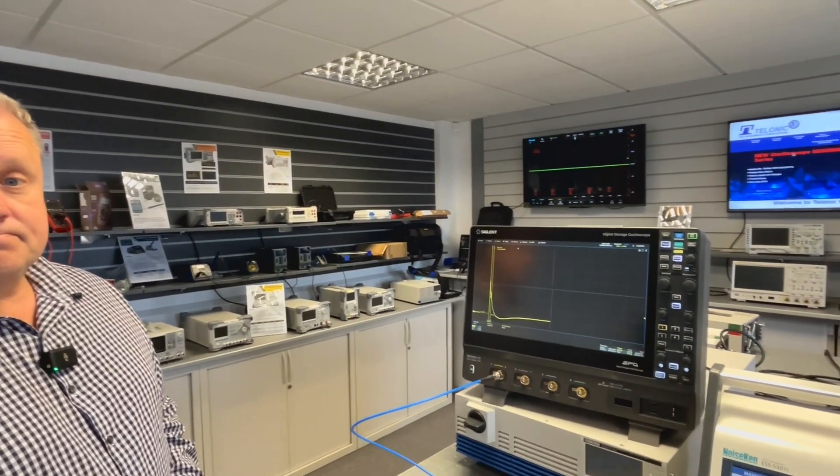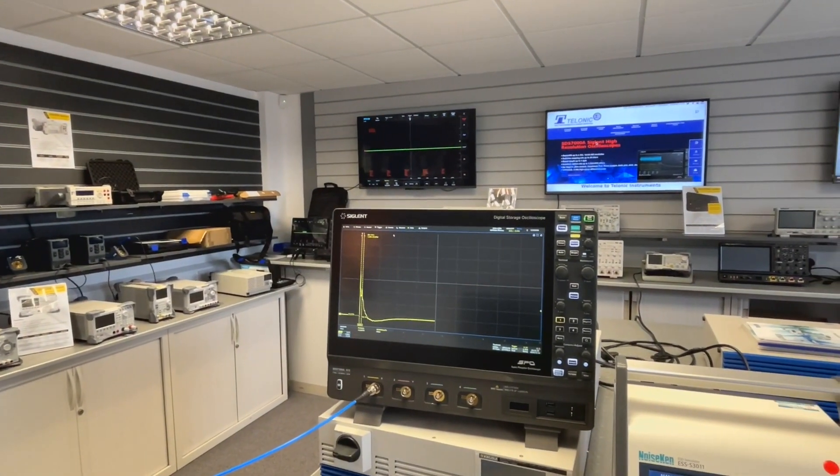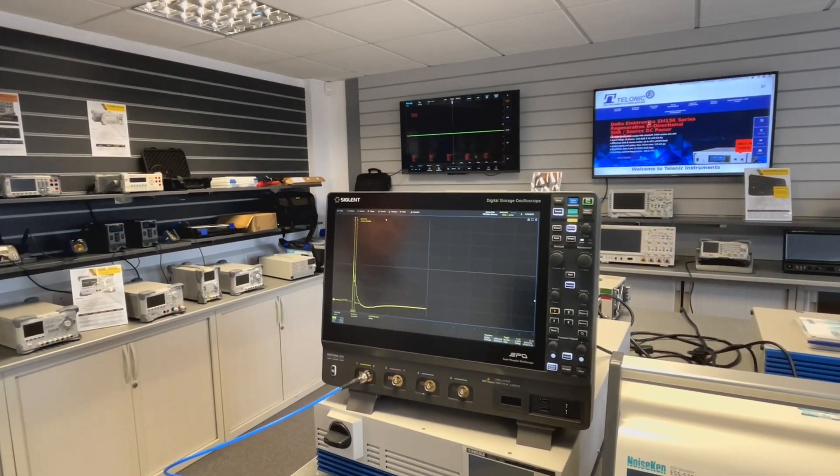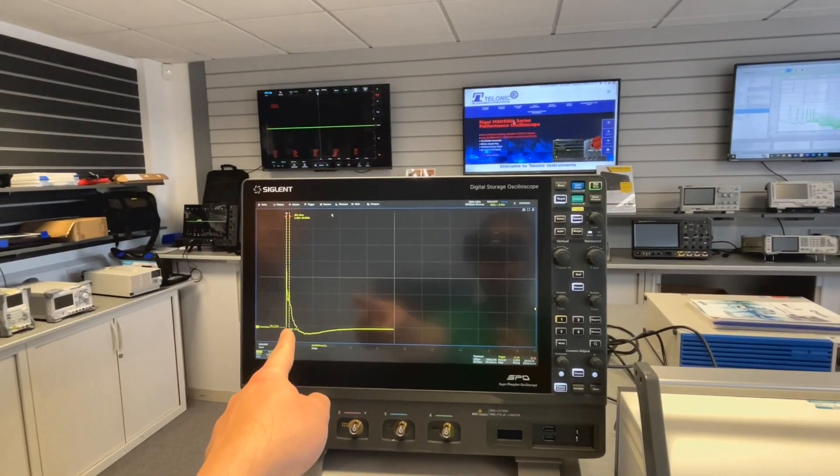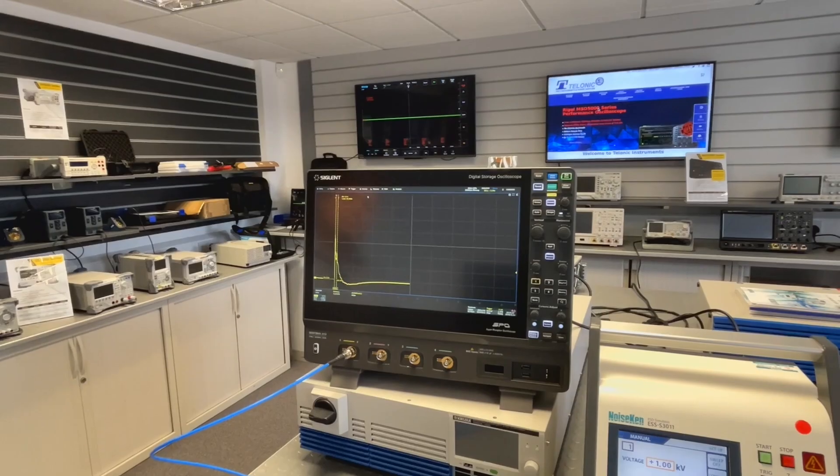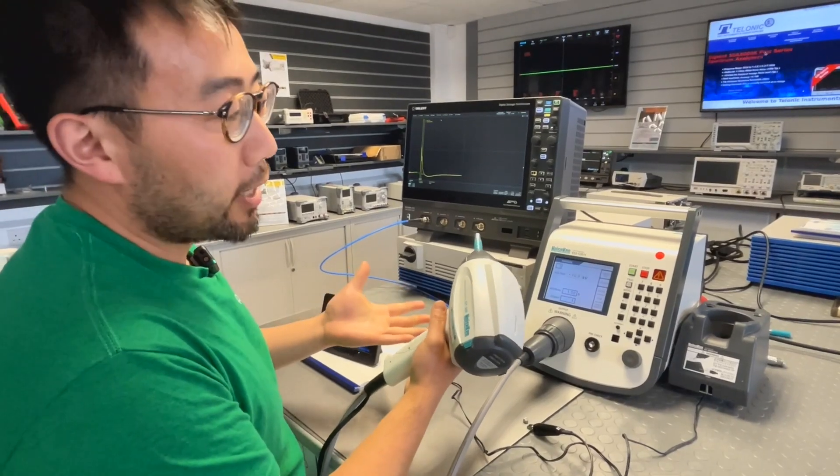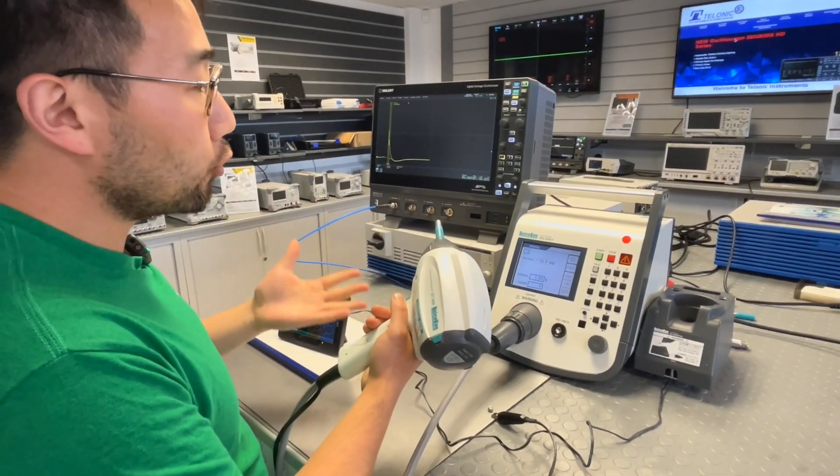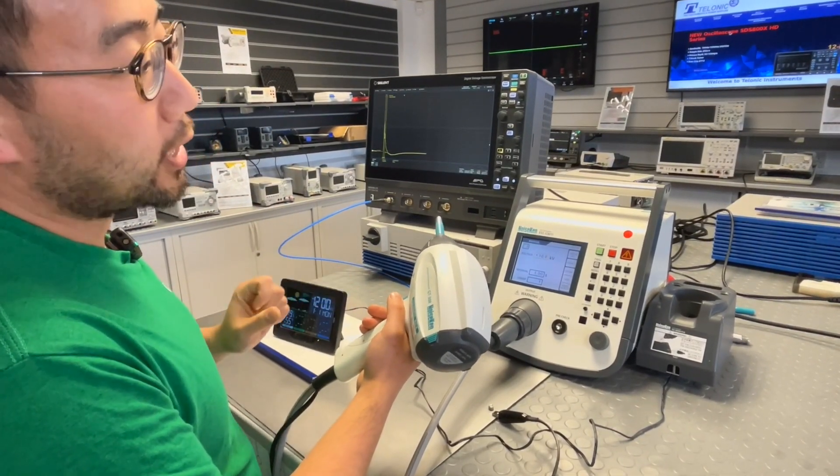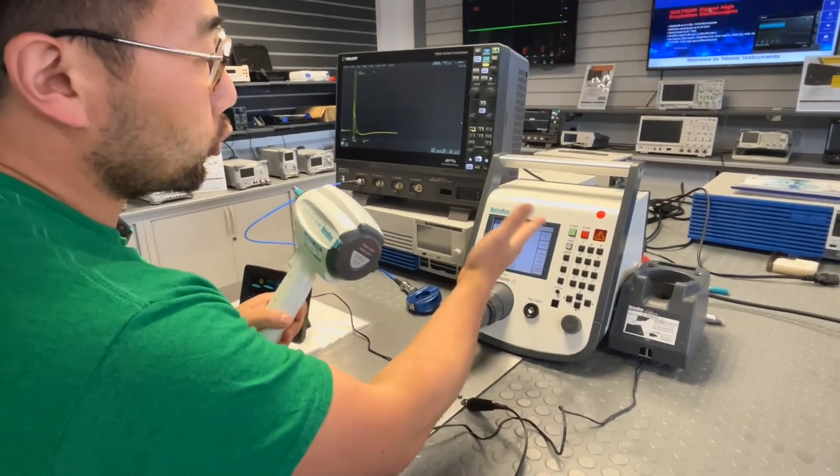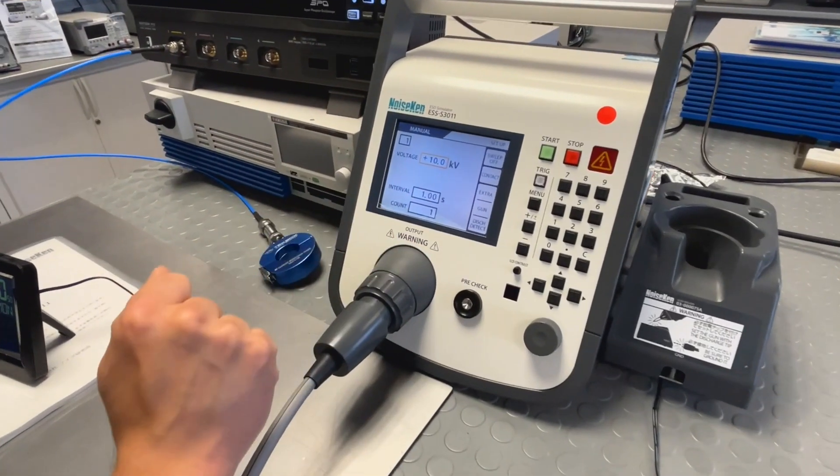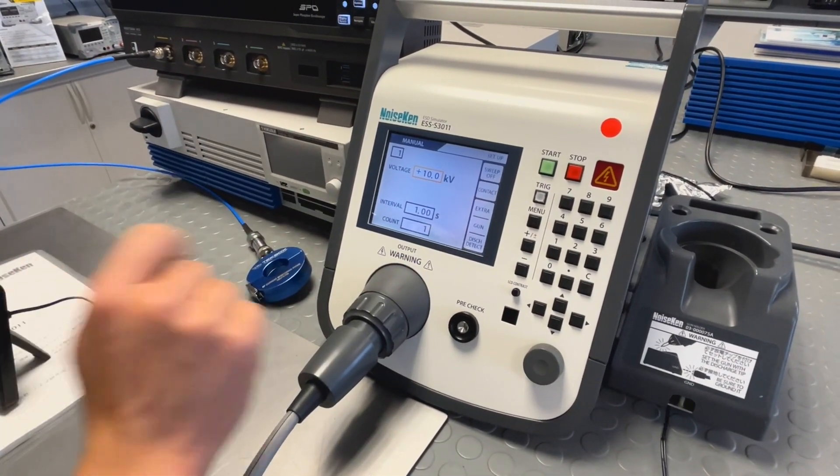As Doug said, normally if you read the ESD test standards they recommend at least 2.5 gigahertz or 2 gigahertz bandwidth oscilloscope to capture the fast rising edges. Min will take you through a demonstration of the ESD gun. Today we don't have a proper ESD test setup as per standard, but we just wanted to show you the typical ESD issues that you might occur in real life. We're going to set up this voltage level to about 10,000 volts, so that's 10 kV, and we'll do one shot.